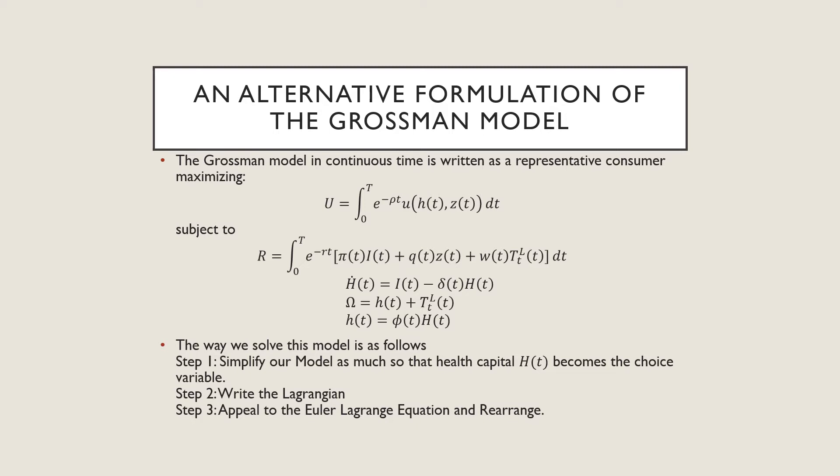The Grossman model in continuous time is still the Grossman model where we have a consumer maximizing his lifetime discounted utilities, picking a health state and a consumption bundle at each moment in time, subject to his budget constraint R, which is the consumer's income.